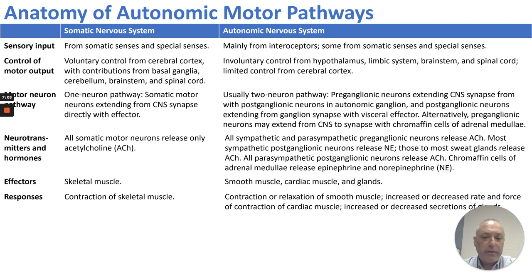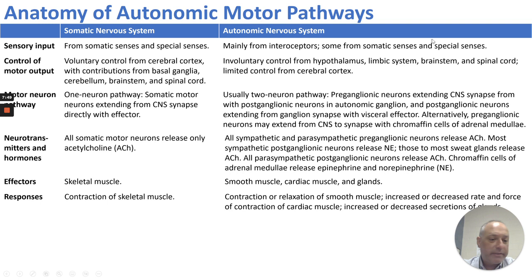Neurotransmitters for the autonomic nervous system are acetylcholine for all sympathetic and parasympathetic ganglia. Most sympathetic postganglionic neurons release norepinephrine, though some release acetylcholine. All parasympathetic neurons release acetylcholine, and the chromaffin cells of the adrenal medulla release epinephrine and norepinephrine. The effectors for the autonomic nervous system are smooth muscle, cardiac muscle, and various glands. Responses include contraction of smooth muscle increasing blood pressure, increase or decrease in rate and force of cardiac contraction, and increase or decrease in gland secretions.